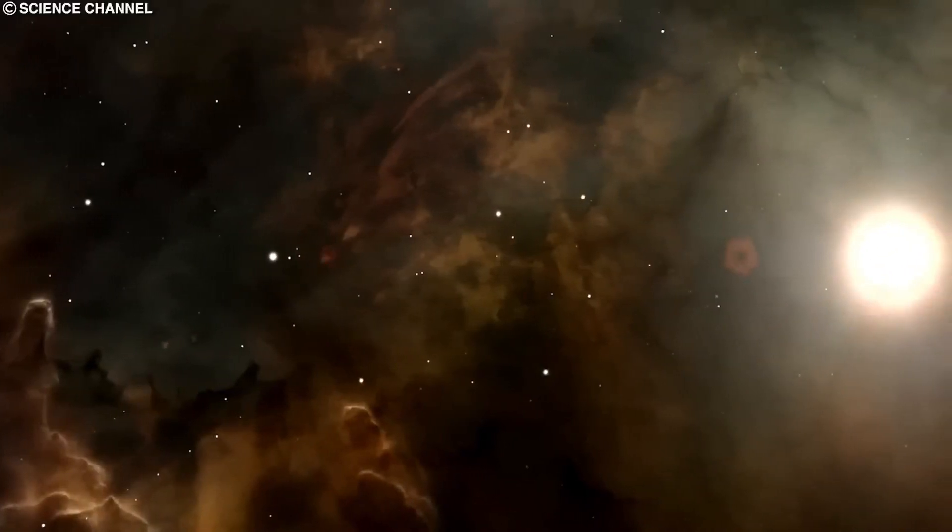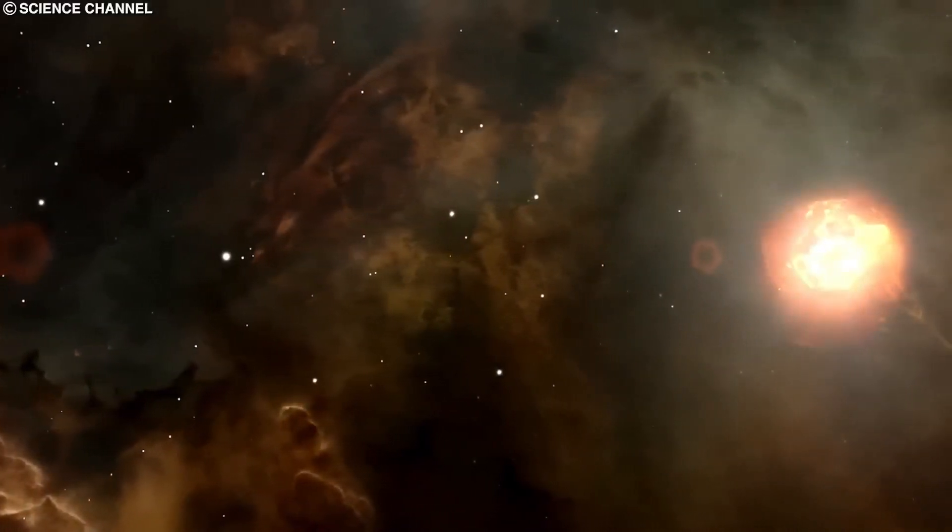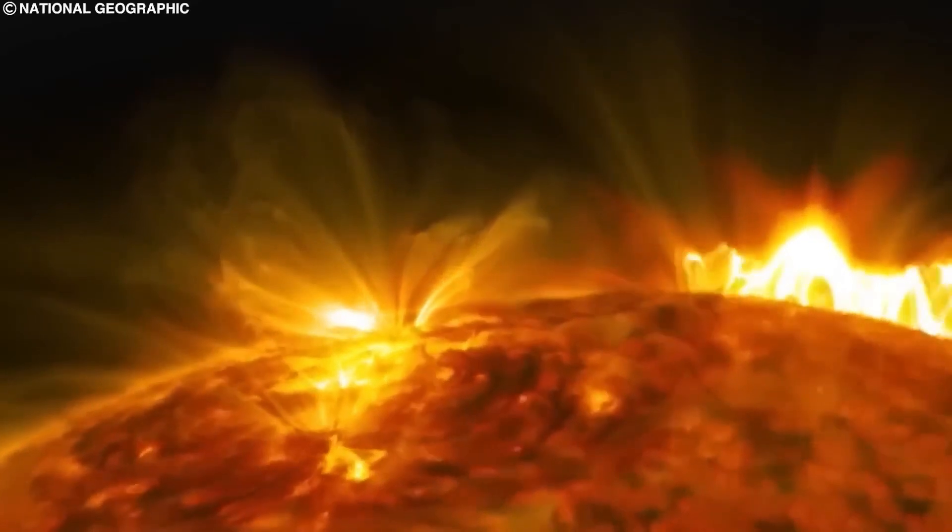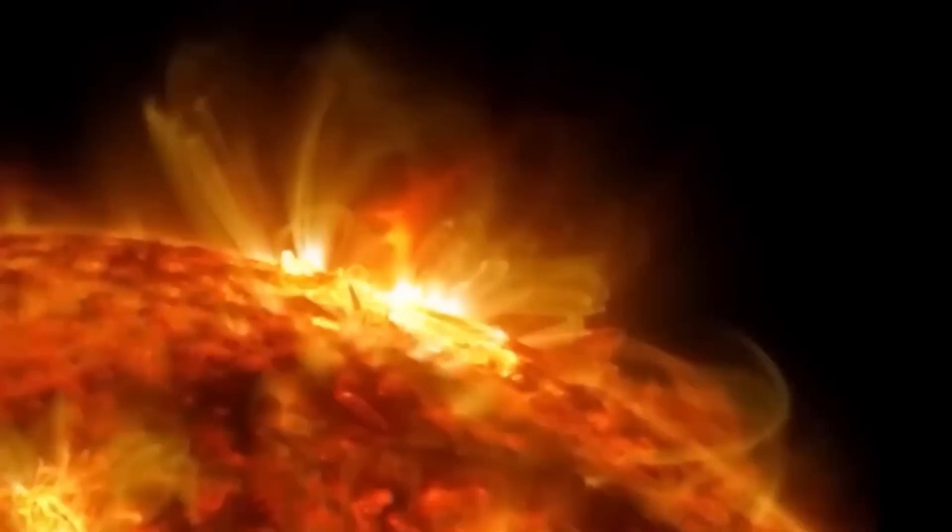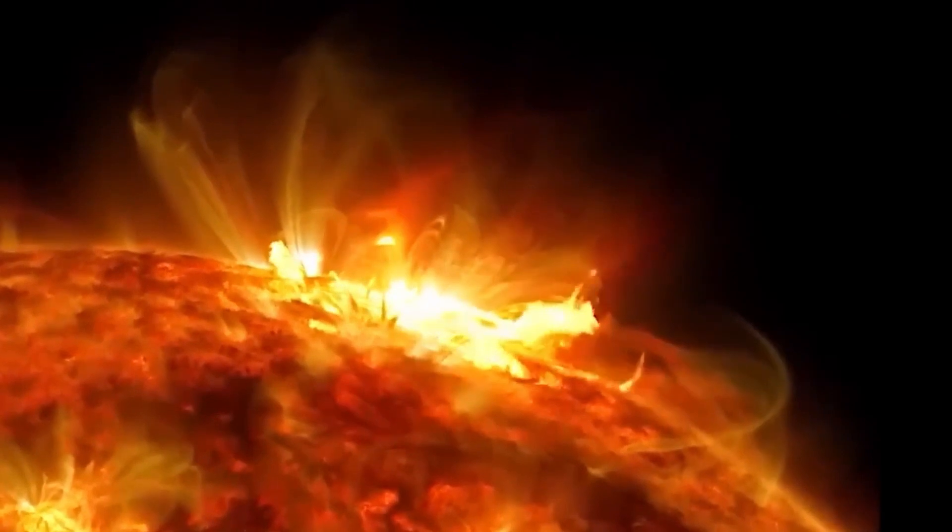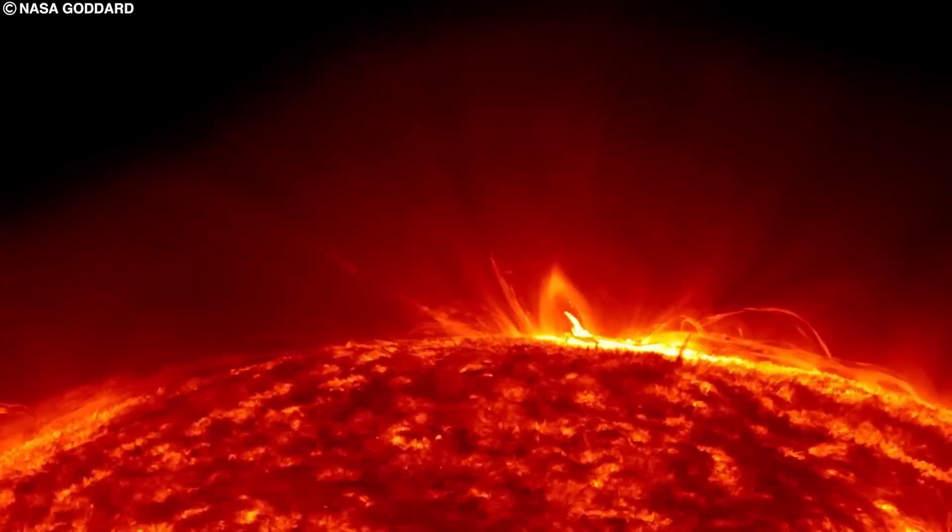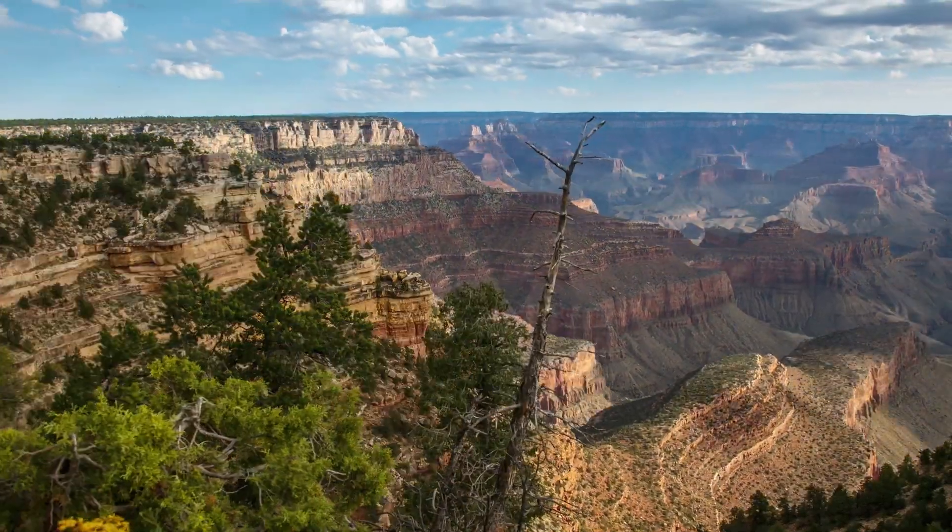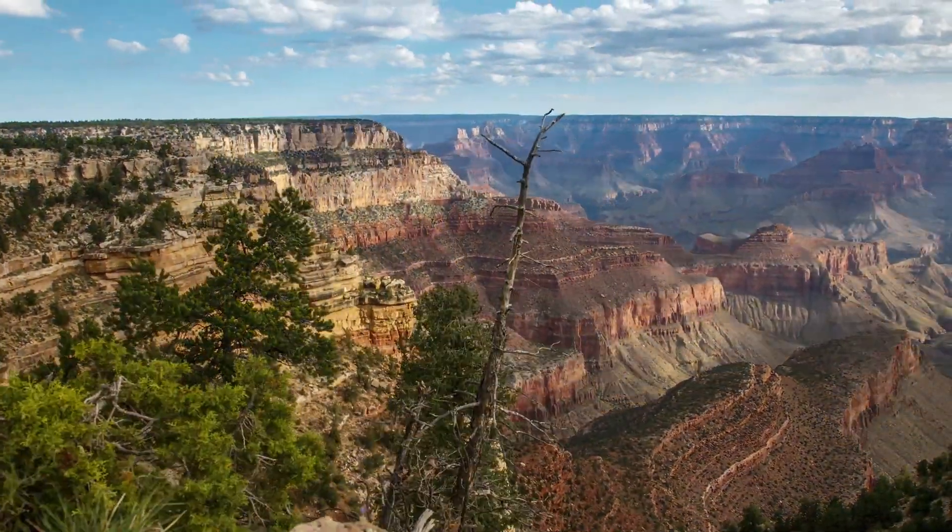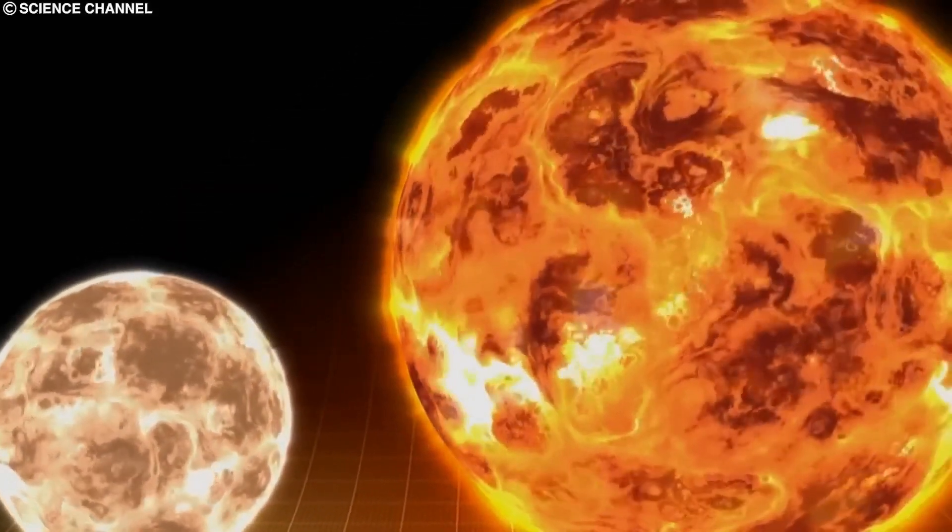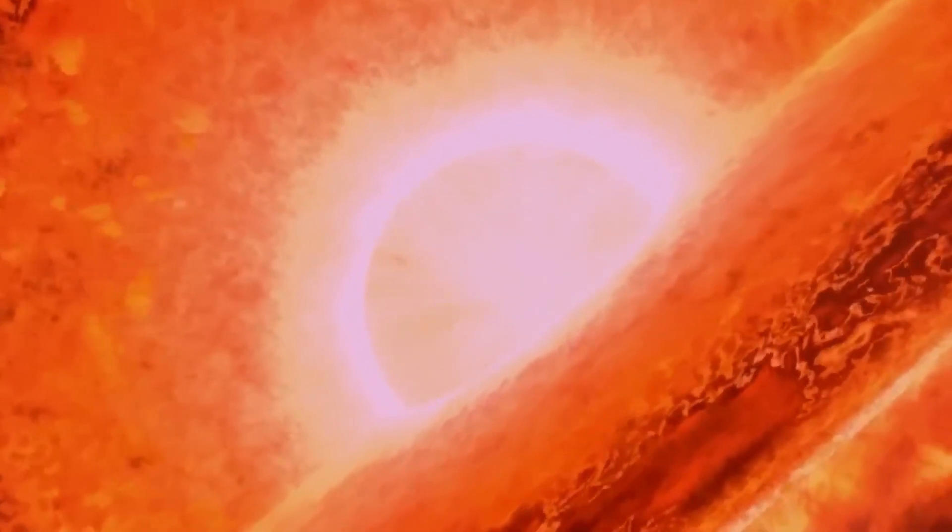Now, a supernova closer than 30 light years could indeed spell trouble. Cosmic rays could wreak havoc on our ozone layer, leading to dangerous levels of UV radiation. This could cause some serious ozone depletion, lasting hundreds to thousands of years and potentially causing an extinction event. But fret not, because such a close supernova is incredibly rare, occurring maybe once every billion years.